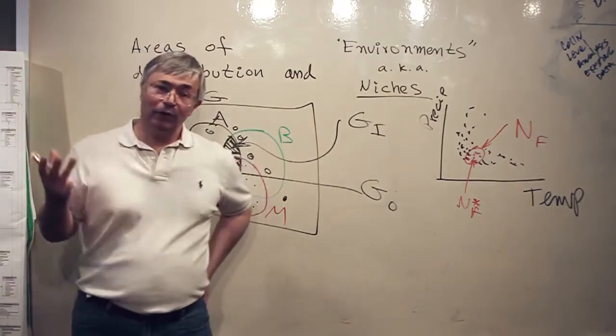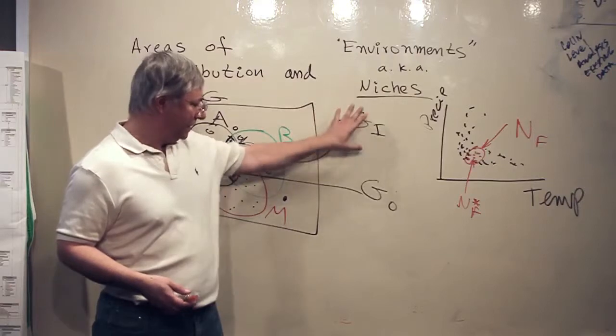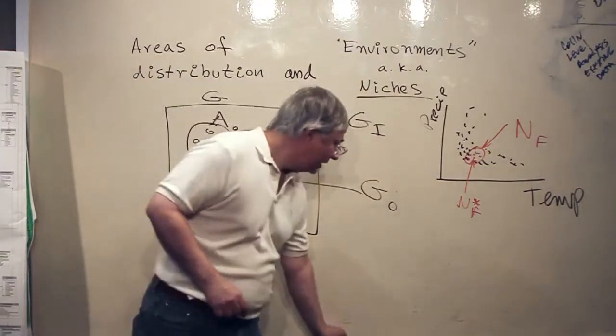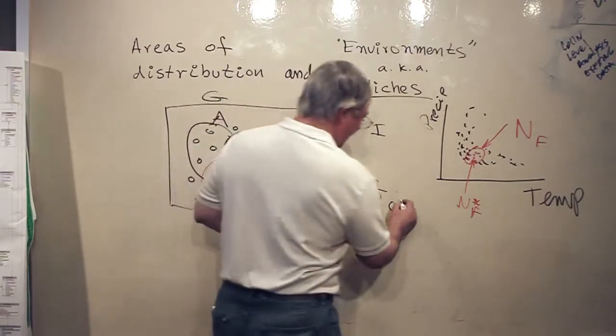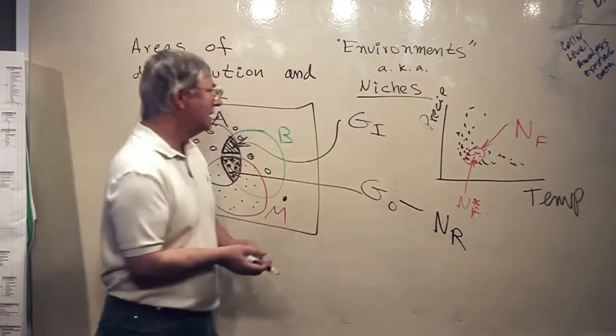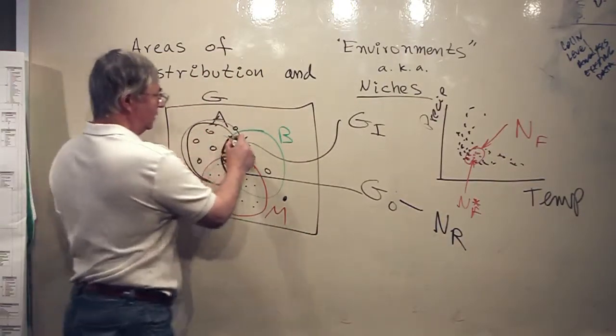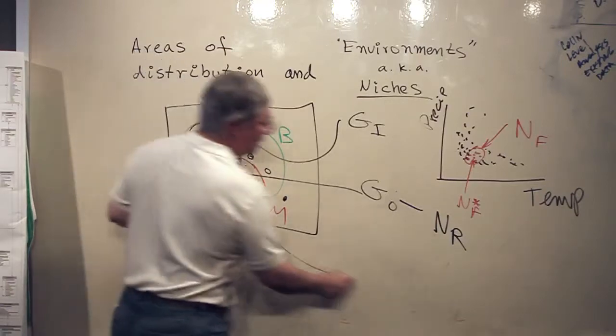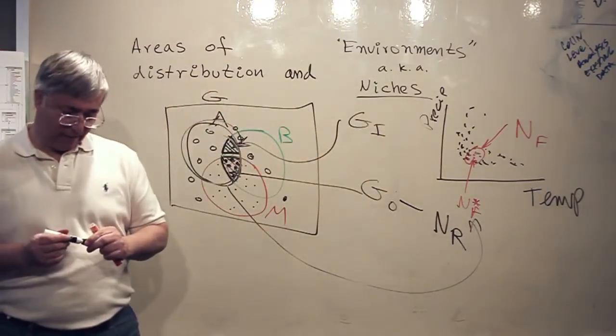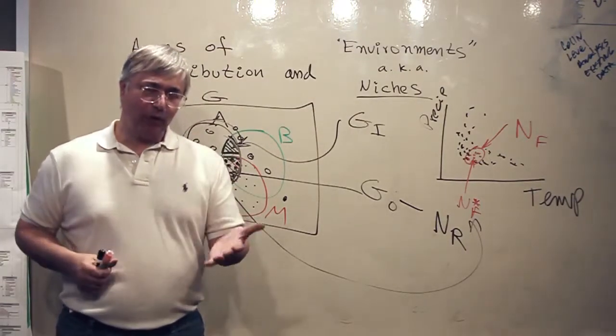And you will be able to calculate the two different niches that you have here because to this G-O, there is a corresponding niche, which is a realized niche. And to the region A, there is a corresponding niche.